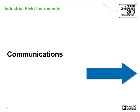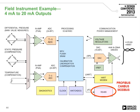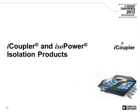Moving on to communications in the context of line-powered devices — relevant protocols include PROFIBUS, CANBUS, and MODBUS. Today we'll specifically discuss that in the context of isolation, and even more specifically CAN isolation.